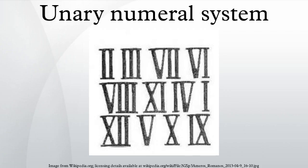The unary numeral system is the bijective base one numeral system. It is the simplest numeral system to represent natural numbers. In order to represent a number n, an arbitrarily chosen symbol representing 1 is repeated n times.